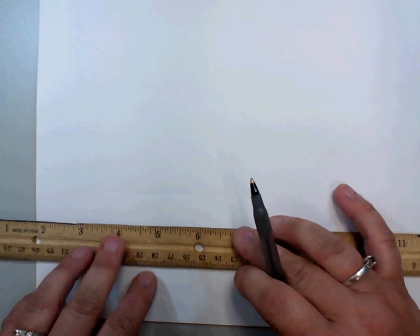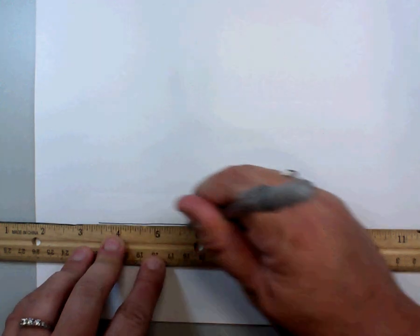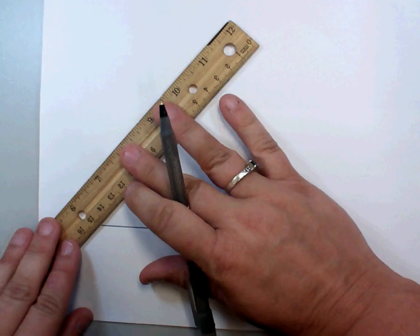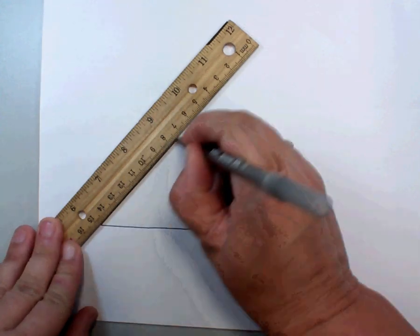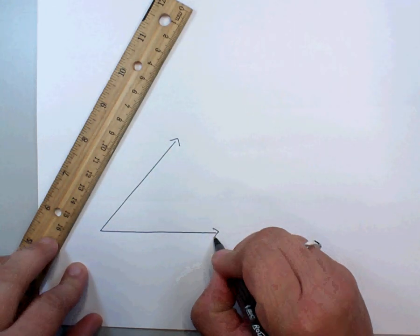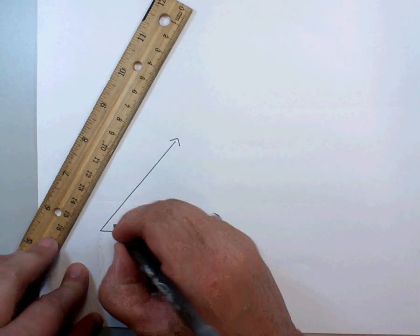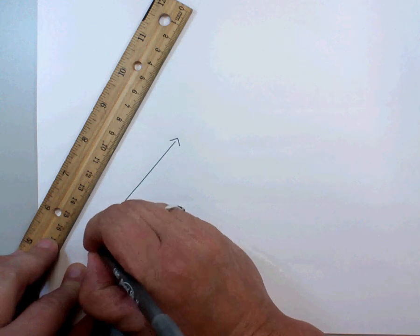So the first thing we're going to do is draw an angle on our paper. And we're going to name this angle P, or we're going to name the vertex of the angle P.